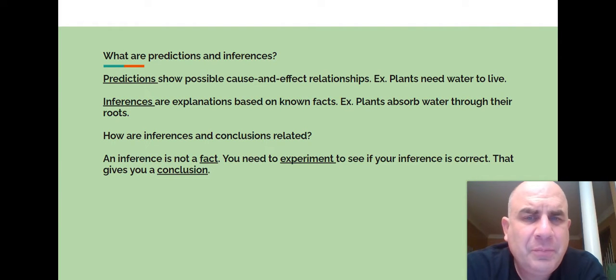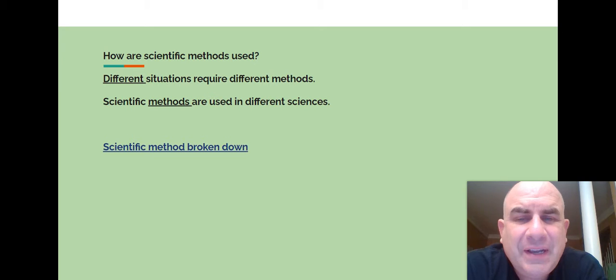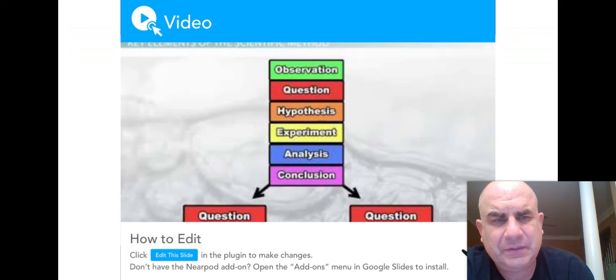Predictions show possible cause and effect relationships. Plants need water to live. And inferences are explanations based on known facts. Example: plants absorb water through their roots. How are inferences and conclusions related? An inference is not a fact. You need an experiment to see if your inference is correct. That gives you a conclusion. How are scientific methods used? Different situations require different methods. Scientific methods are used in different sciences.